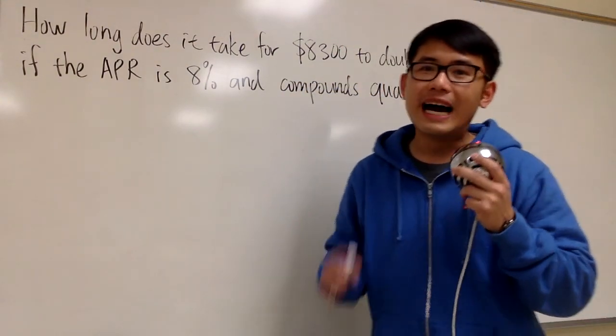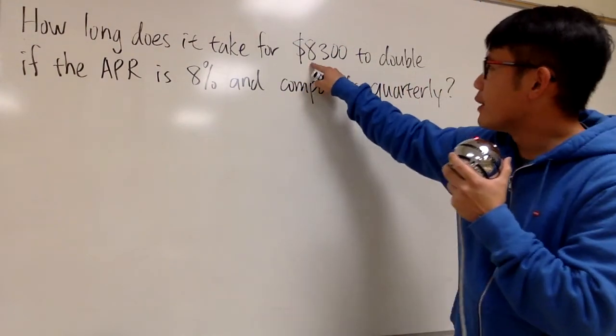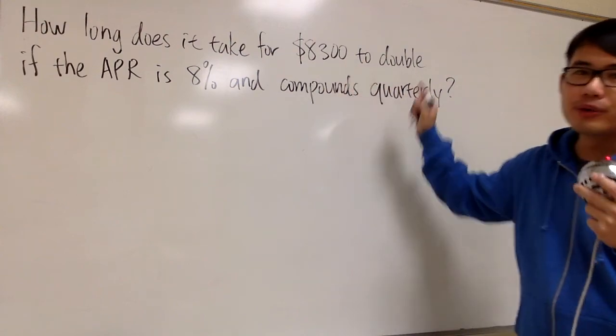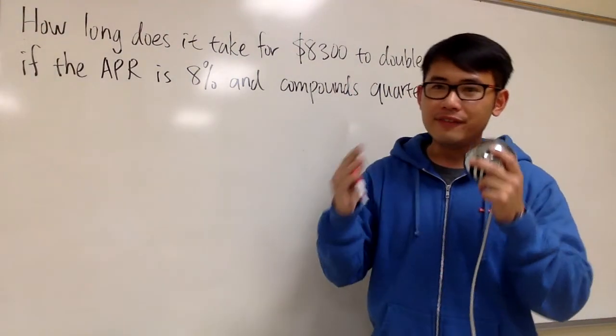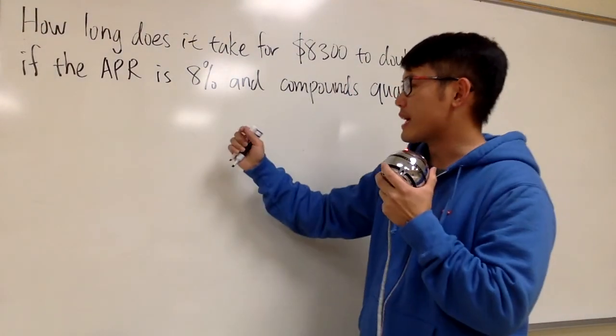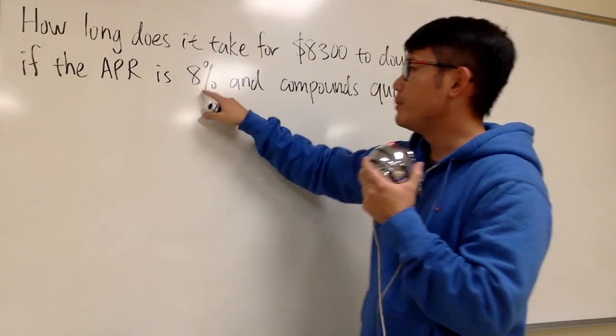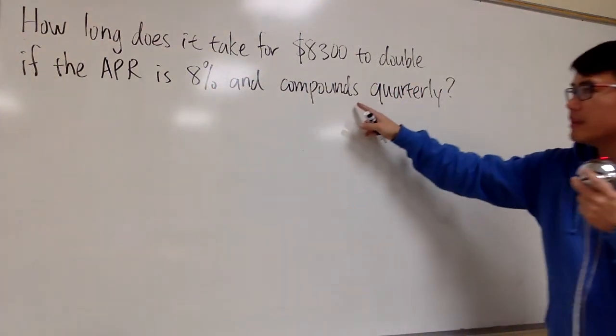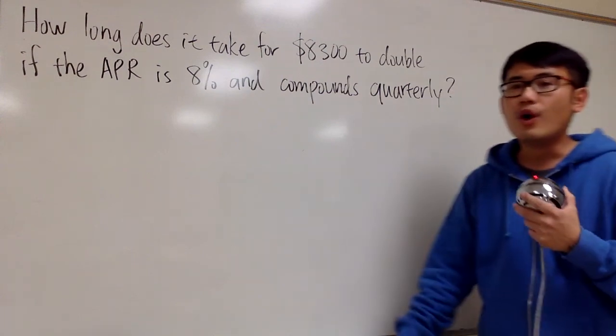In this question, we're going to see how long does it take for $8,300 to double if we are going to invest the money into an account that has the APR being 8% and the account is going to compound interest for you quarterly.